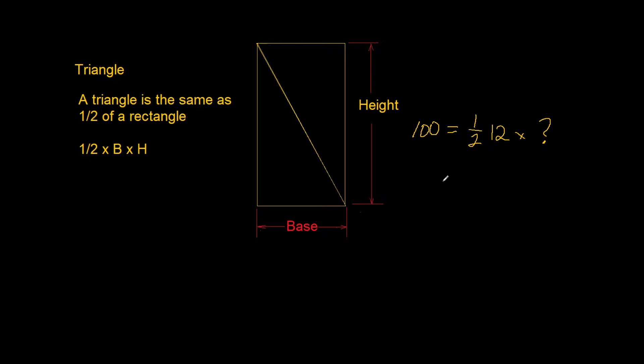So to do this, you would divide both sides by 0.5 times 12. That becomes 100 over 6. So your height then is 16.667.